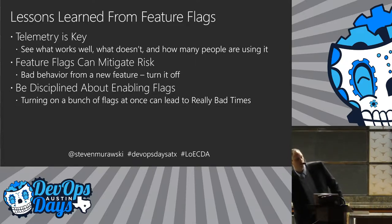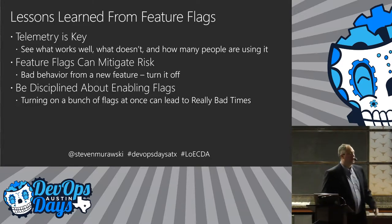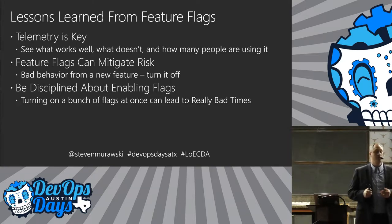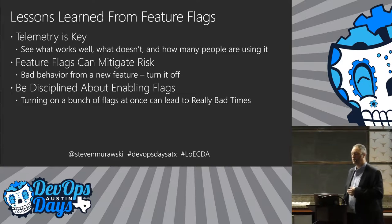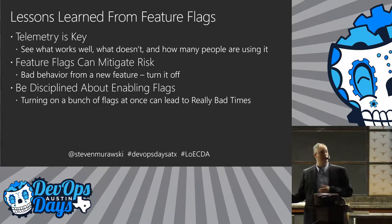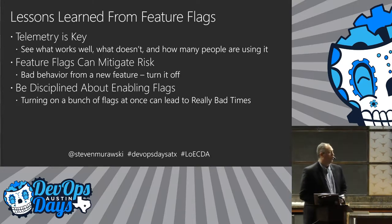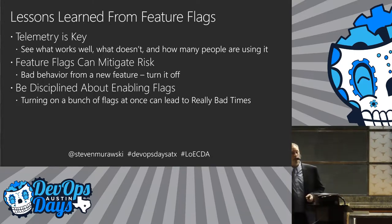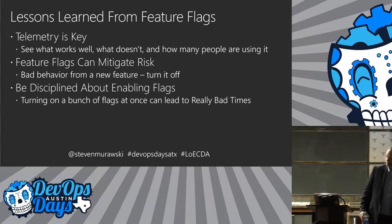One lesson from working with feature flags: telemetry is key, tracing is key. When you turn on a feature, you need to know what's happening with that code path when troubleshooting an issue. Are people using it? If you turn something on for a bunch of new people, are they actually using that feature and giving you the feedback you need to decide whether to go wider? One great thing about feature flags: if something is interacting improperly or impacting performance in production, you can just turn it off.